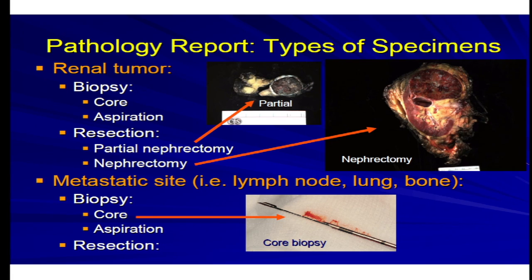The most common specimens that we see are nephrectomies, resections of the tumors. They're either partial nephrectomies or a complete nephrectomy. The partial nephrectomy are smaller resections, partial resections of the entire tumor, which include a little bit of the nephric fat and a little bit of the perinephric tissue as well. The goal is to try to get the entire tumor out with a negative margin of resection. When the tumors are bigger or infiltrative, we tend to get the entire kidney.